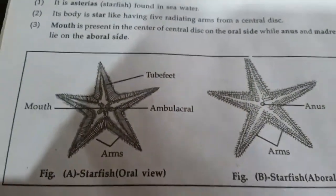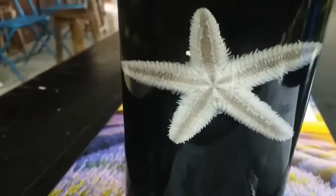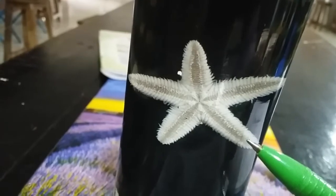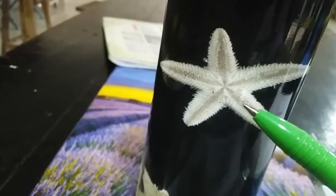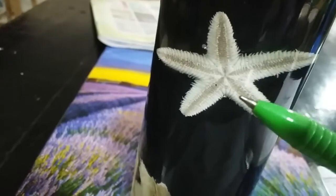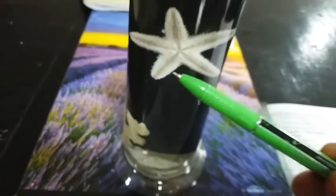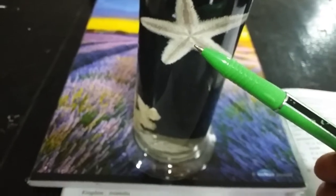But I have one original starfish for you. You can see it right now. Here in this apparatus, you can see this original starfish. These are the five radiating arms of the starfish. And this dark cloud structure — you can consider these as small tube feet which can be used for the process of respiration, locomotion, as well as catching their prey.